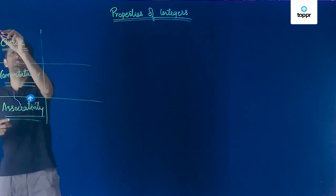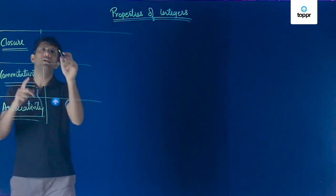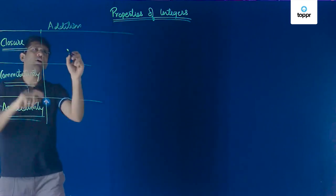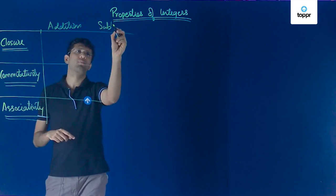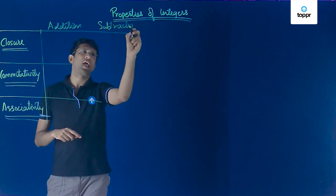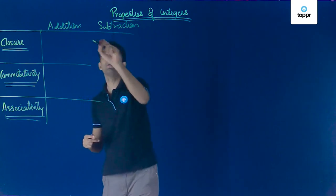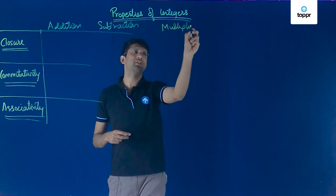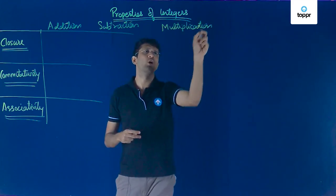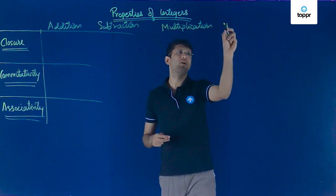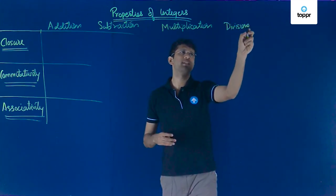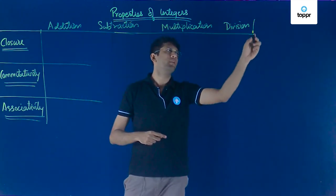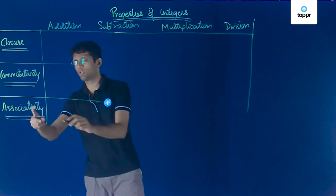When we were dealing with integers we had operations such as addition. We also saw how to perform subtraction, and we also learned how to multiply two integers. Another operation we learned was multiplication, and finally we also learned how division of two integers works. We will understand each operation with respect to the properties listed.